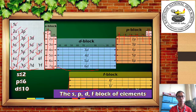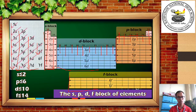For the d block, it can hold a maximum of 10 electrons — there are 10 columns in the d block, confirming this. And for the f block, it can hold a maximum of 14 electrons — there are 14 columns in the f block, confirming that as well.